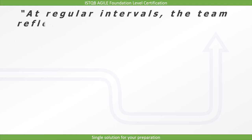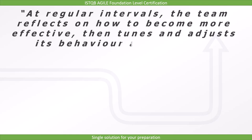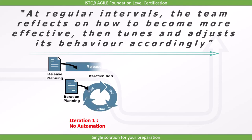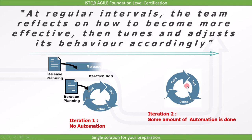The twelfth and last principle is: at regular intervals, the team reflects on how to become more effective, then tunes and adjusts its behavior accordingly. Since the same team will continue working on the product, they will try to reduce their effort by automating day-to-day activities. While working on an iteration, they find which steps can be automated and discuss it with the team to find the best approach. By doing this, the team becomes more efficient for the next release.